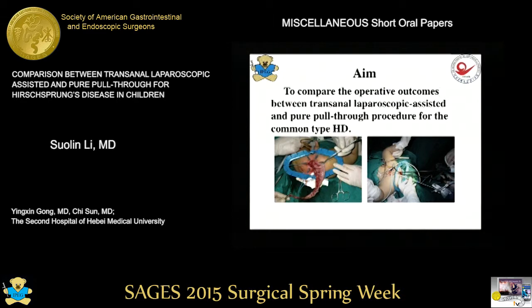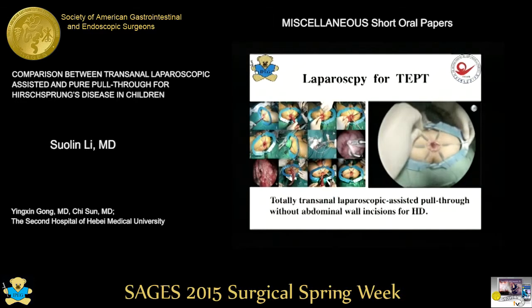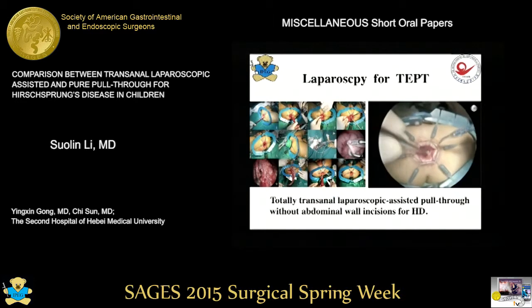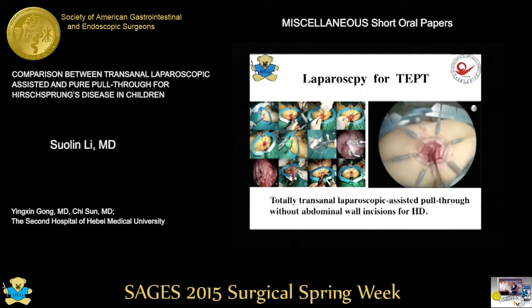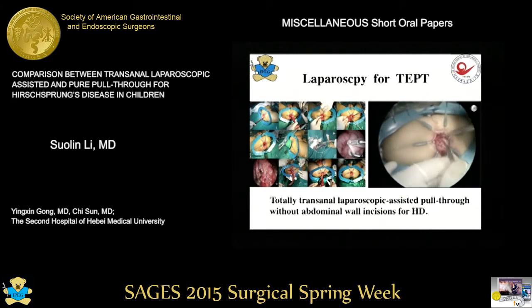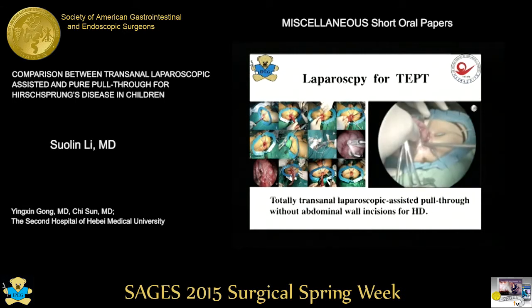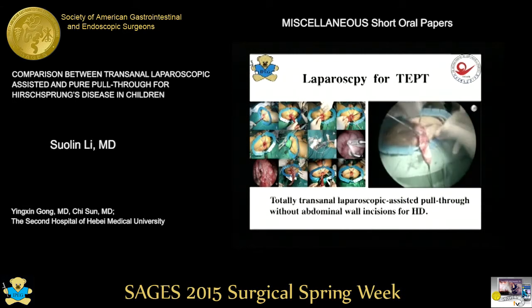The aim is to compare the operative outcomes between transanal laparoscopic assisted and pure pull through procedure for common HD. The rectum mucosa is exposed with a lone star retractor for opening the anus, and the transanal submucosal dissection is done like a Soave procedure.